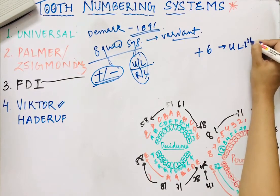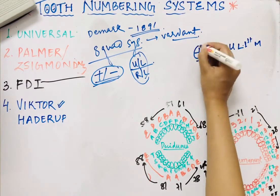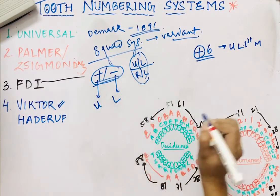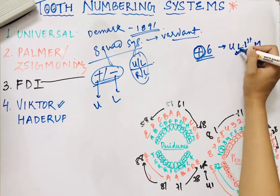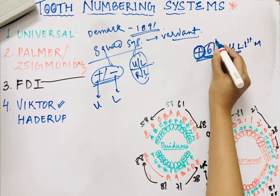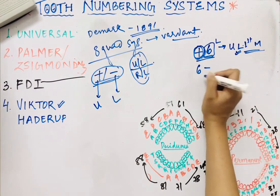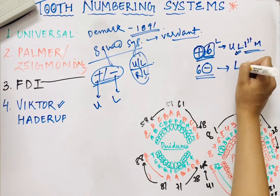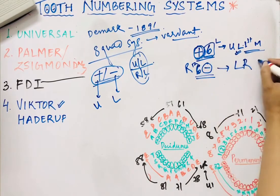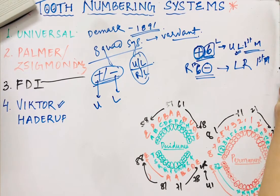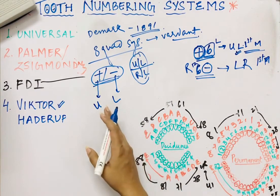For example, '+6' written with the number on the left of the plus sign means: upper (because it is plus), left (because the number is written on the left side), and 6th tooth which is the first molar. If '6-' is written with the number on the right of the minus sign: minus means lower, number on the right means right side, and 6 is the first molar — so it is mandibular right first molar.